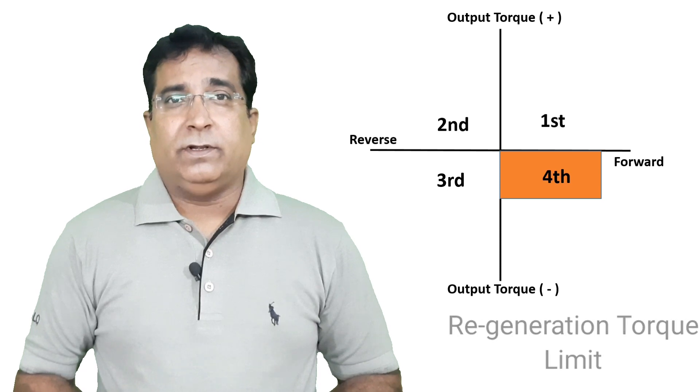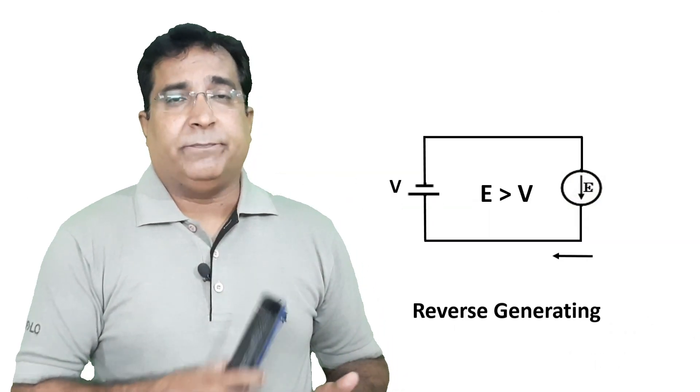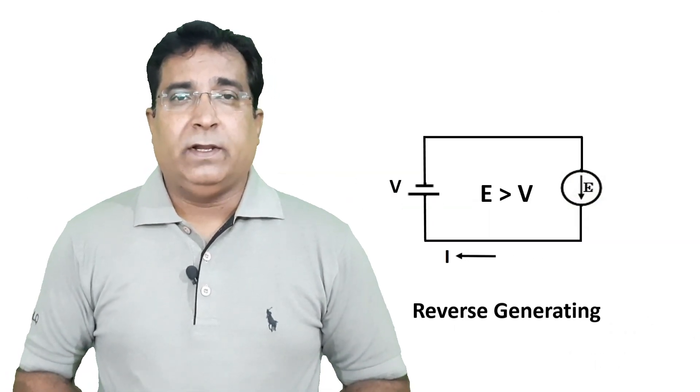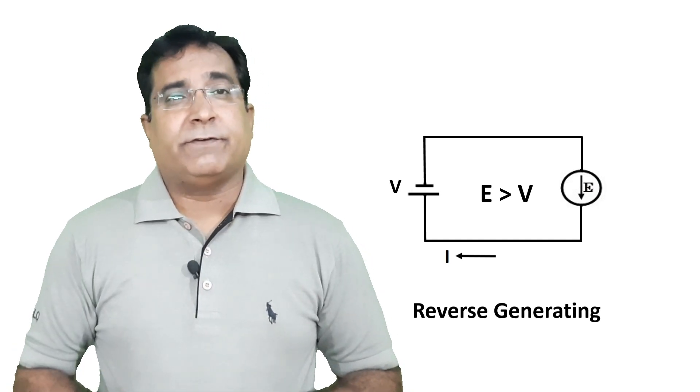Therefore motor offers a torque against the motion and keeps the speed down under safe limit. Again you can set the limit on torque. Here the motor becomes the power source E and pumps the current I into voltage source V. This depicts regeneration but in reverse direction. Hindering regeneration.